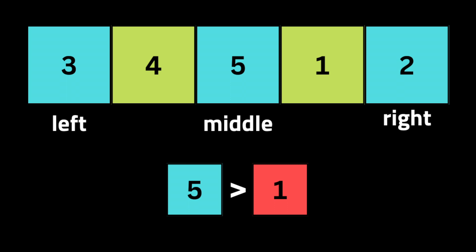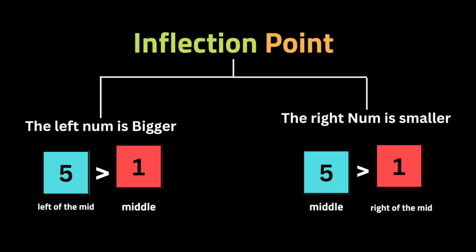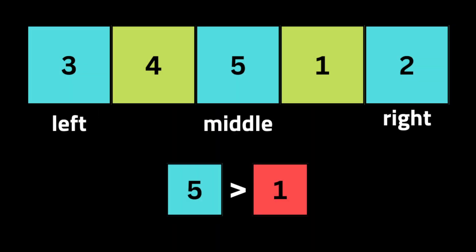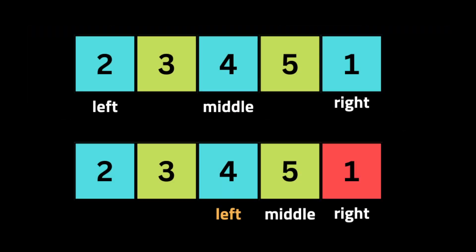To find the minimum in a rotated sorted array, we look for an inflection point. In a normal sorted array, all numbers to the left are smaller than numbers to the right. The inflection point happens when the left number is larger than the current number, or the number to the right is smaller — that right number is the minimum. We implement binary search, checking if the middle is at an inflection point.